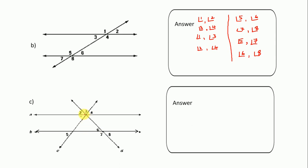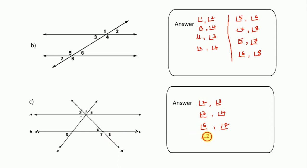We write whatever the clear angles: 2 and 3 are adjacent angles, then 3 and 4. Here 6 and 7, then 7 and 8. These are the adjacent angles of this figure.